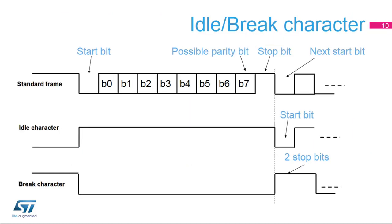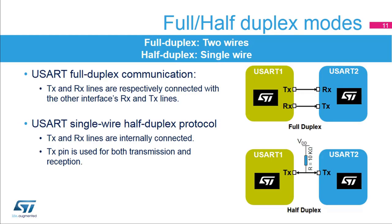The standard frame was described in the previous slide. This slide shows an example of 8-bit data frames configured with one stop bit. An idle character is interpreted as an entire frame of ones, including the number of stop bits. A break character is interpreted as receiving zeros for a frame period; at the end of the break frame, two stop bits are inserted. The USART supports full duplex communication where TX and RX lines are respectively connected with the other interface's RX and TX lines. The USART can also be configured to follow a single-wire half-duplex protocol where the TX and RX lines are internally connected.